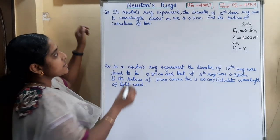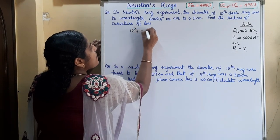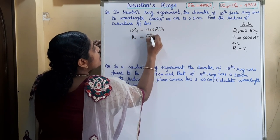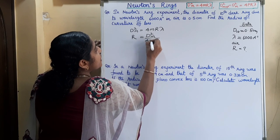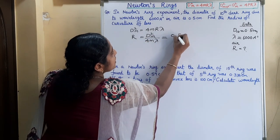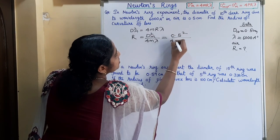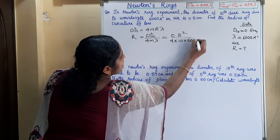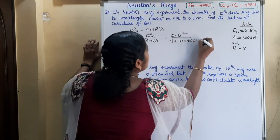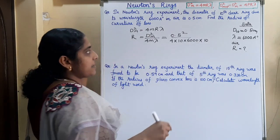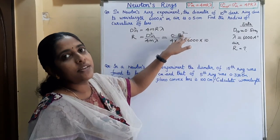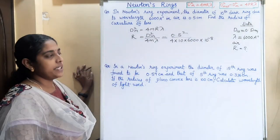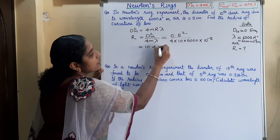We use the formula d²_m = 4mRλ, so radius of curvature R = d²_m / (4mλ). That is 0.5² divided by 4 × 10 × 6000 Angstrom, which is 6000 × 10⁻⁸ cm. That is equal to 104 cm.